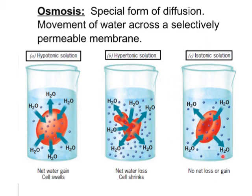The third situation is called isotonic, where the solution has a similar concentration of solute outside the cell as inside the cell. In an isotonic solution, there is no net loss or gain of water — some water flows in and some flows out, but it's the same amount total.